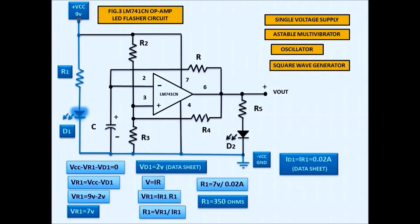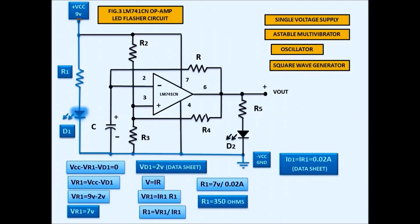We get R1 equal to 350 ohms — this is the computed value. We use 0.02 amperes because the current through R1 equals the current through D1 by Kirchhoff's Current Law, and 0.02 A is the current needed to turn on the LED. I am using 5 kilohms to decrease the brightness of the LED, and now the LED turns on.